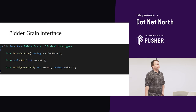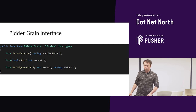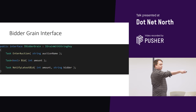They need to bid obviously — what's an auction if nobody's spending money? And we have NotifyLatestBid, so if we've been outbid we need to know how much we've been outbid by. The eagle-eyed among you will have noticed Task, Task<bool>, Task — it's because everything in Microsoft Orleans needs to be a Task.